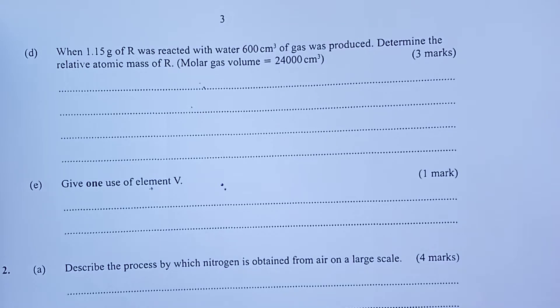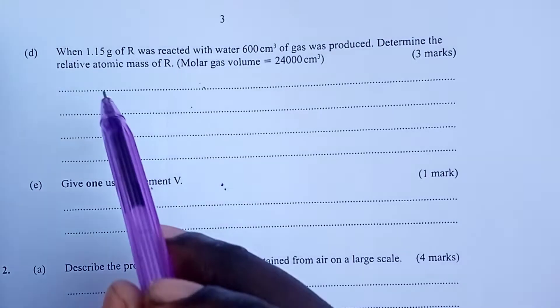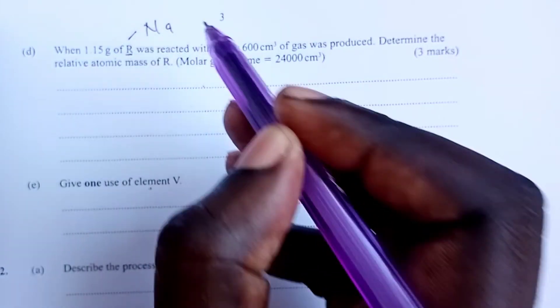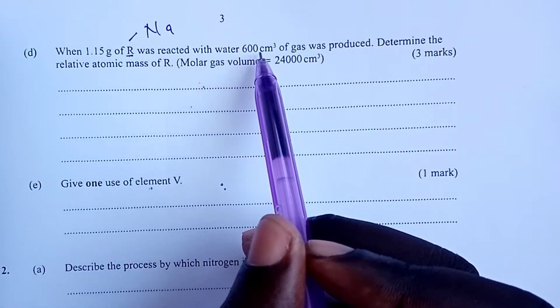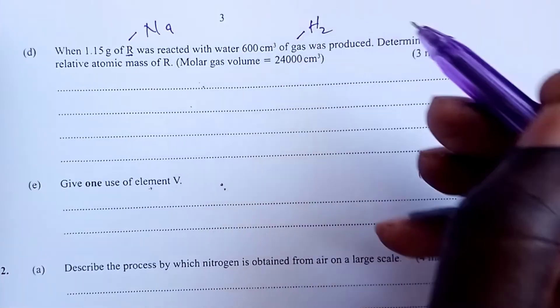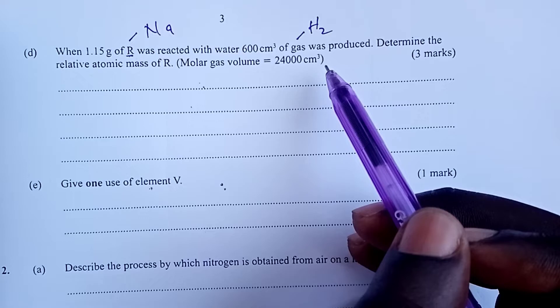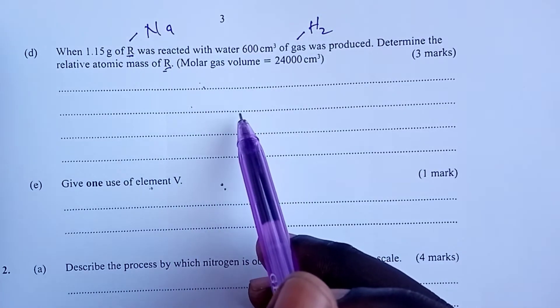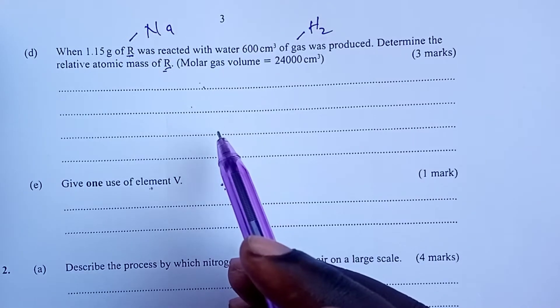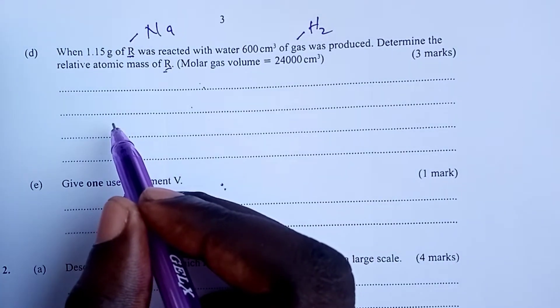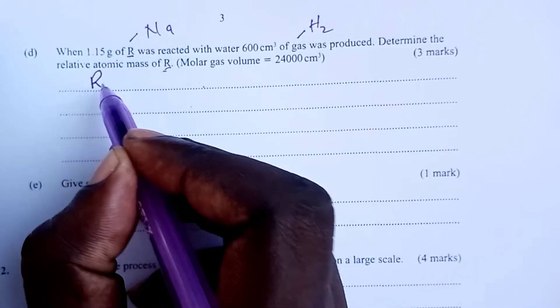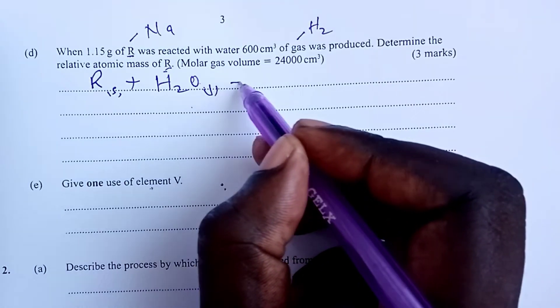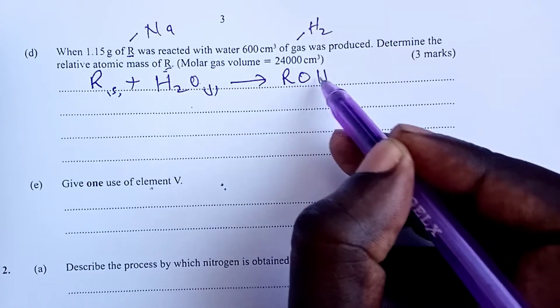Looking at the next question, we were asked—this one was borrowed from the mole—we were asked that when 1.15 grams of R (R, don't forget, was sodium) was reacted with water, 600 cubic centimeters of gas (this gas is obviously hydrogen) was produced. We are asked to determine the relative atomic mass of sodium, given that molar gas volume is 24 liters at RTP.